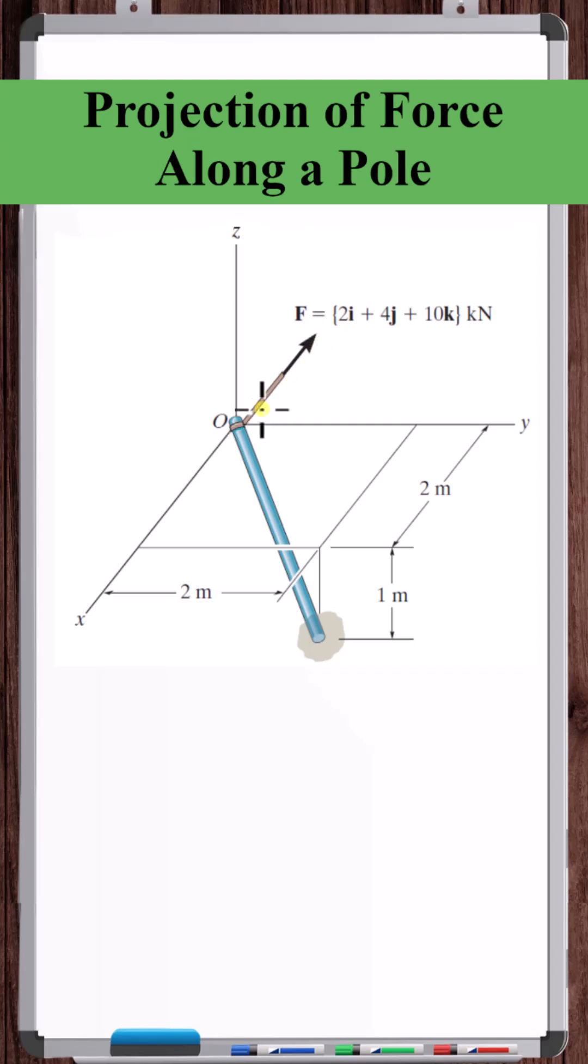Let's determine the projection of this force along the pole. To find the projection of a vector, like a force vector, along any direction, you dot that vector with a unit vector in the desired direction.